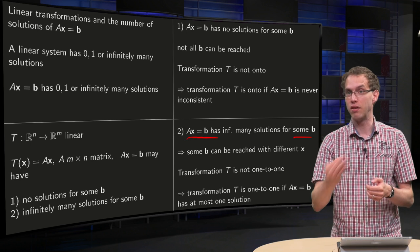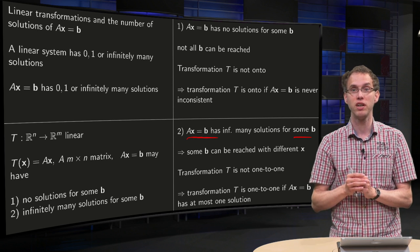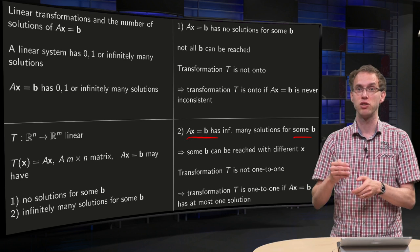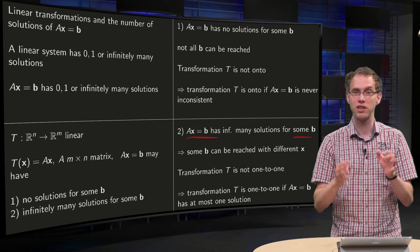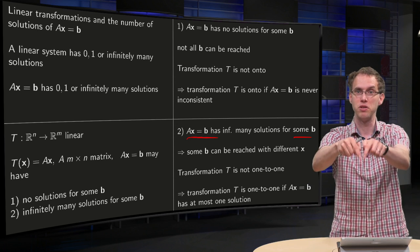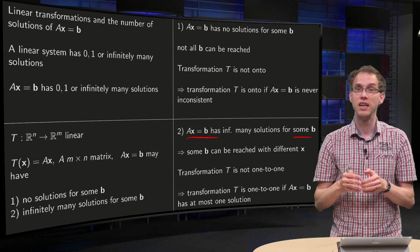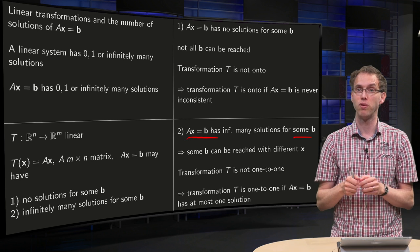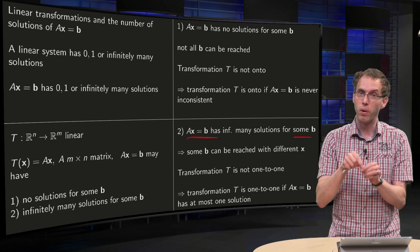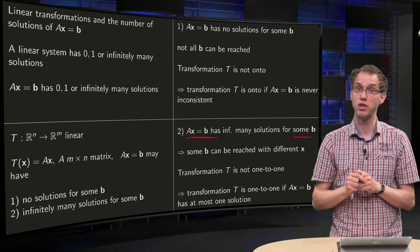Because Ax1 equals b, Ax2 equals b, Ax3 equals b — so t(x1) equals b, t(x2) equals b, t(x3) equals b, etc. Different x's are mapped to the same b, which means the transformation t is not 1-to-1, because 1-to-1 means only one x maps to a particular b and different x's cannot map to the same b.